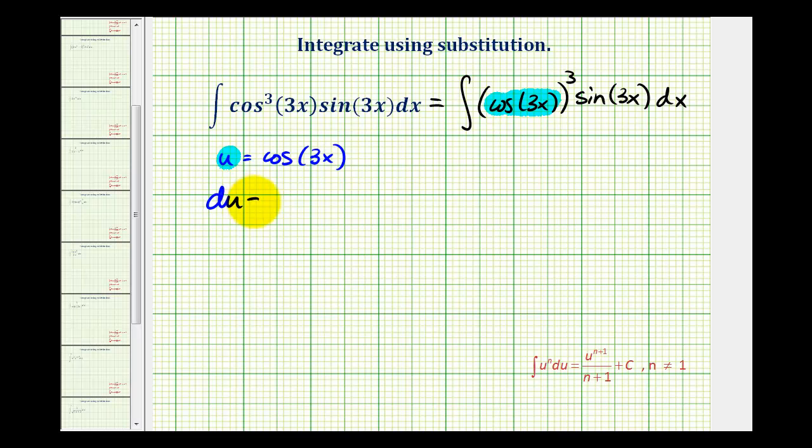Differential u is going to be equal to the derivative of cosine 3x times dx. This will require the chain rule. The derivative of cosine 3x is going to be negative sine 3x times the derivative of 3x. So, we'll have negative 3 sine 3x dx.